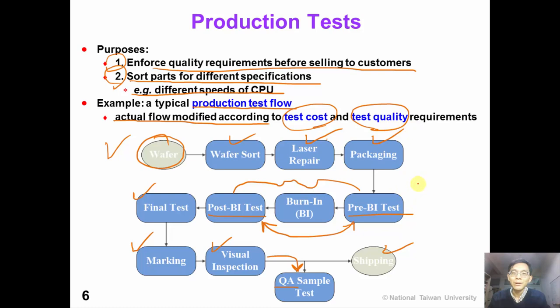The actual test flow can be modified according to the test cost and test quality requirements of the product. For example, if this is not a very expensive IC, we could choose to skip the burn-in test because burn-in is quite expensive.